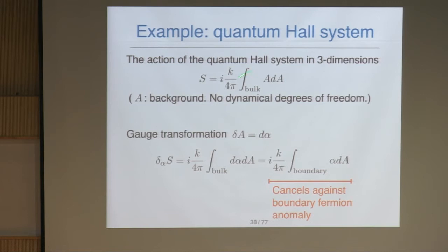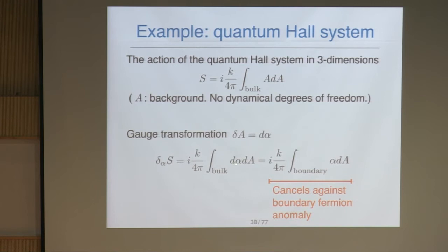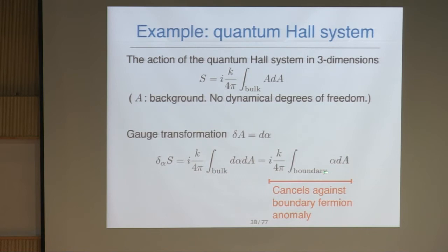Now let's perform a gauge transformation: δA = dα, where α is the gauge transformation parameter. The action changes under this gauge transformation: we get ∫ dα ∧ dA over the bulk. By Stokes' theorem, we can write this as an integral over the two-dimensional boundary: ∫_∂ α ∧ dA. The point is that this bulk action is not gauge invariant if there is a boundary.